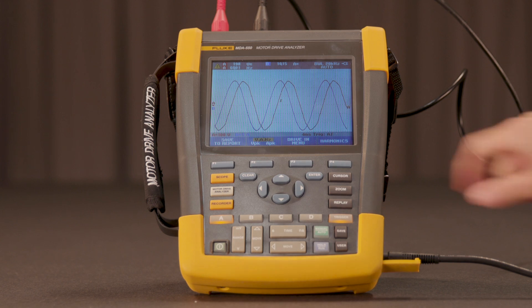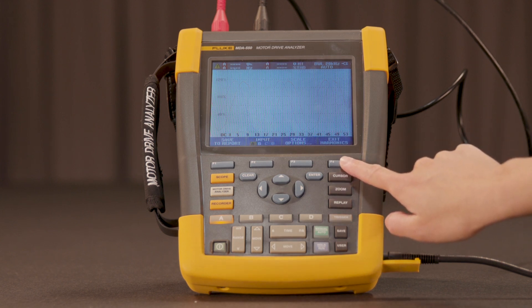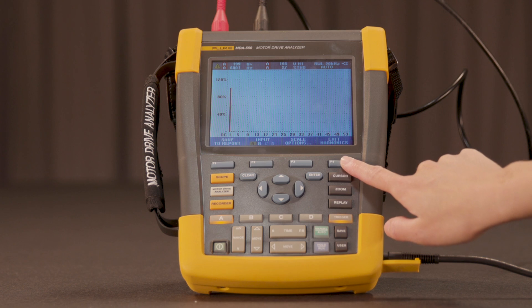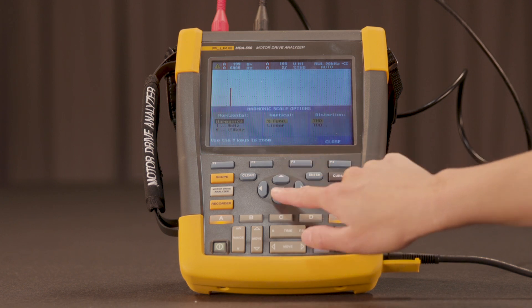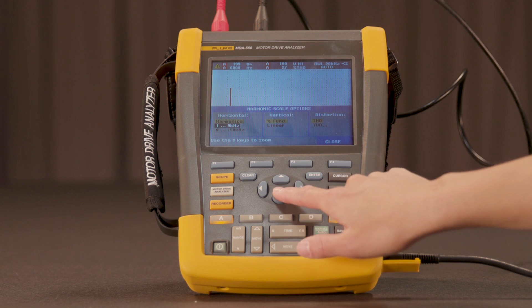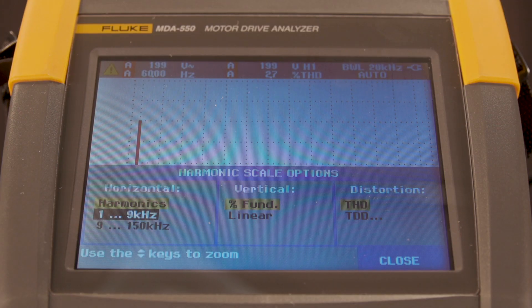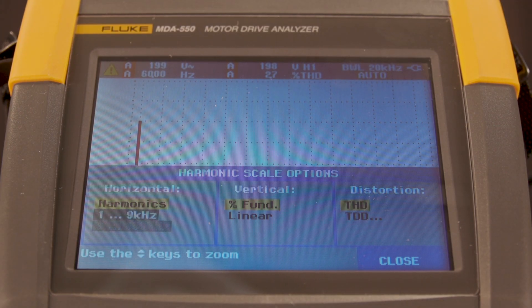With the MDA550 in this measurement mode, harmonics are also displayed. This can be multiples of the power frequency or in the ranges of 1 to 9 kHz and 9 to 150 kHz.